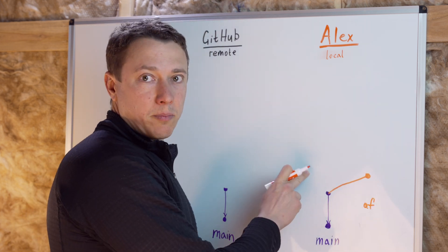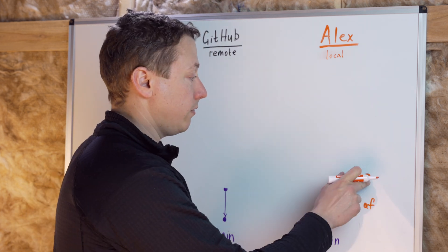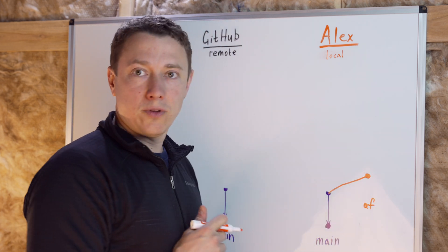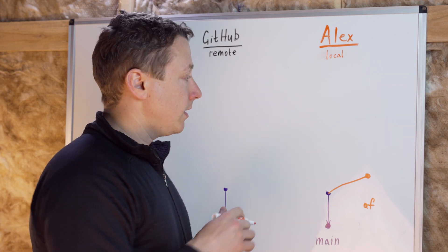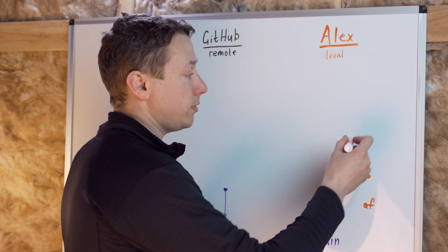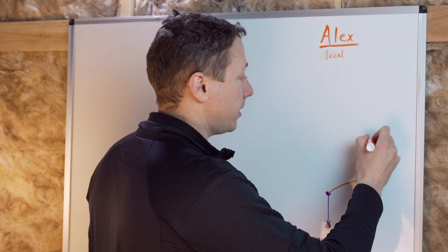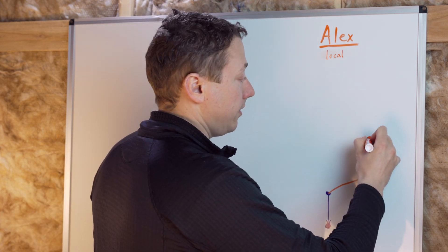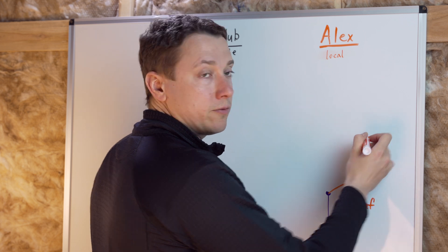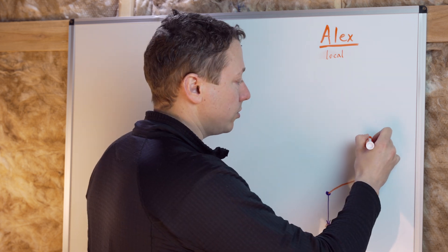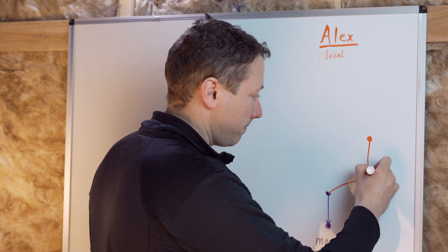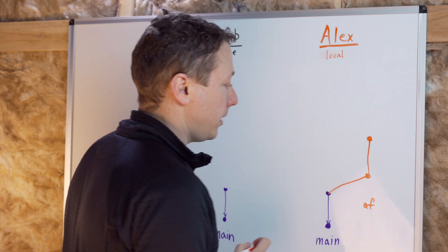The latest commit of main is the parent of that first commit in your feature branch. Then you create another commit in your feature branch, and that second commit points to the first commit as a base.